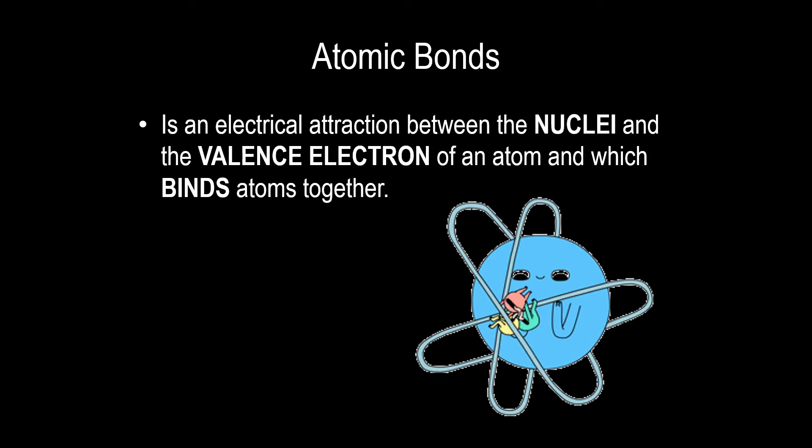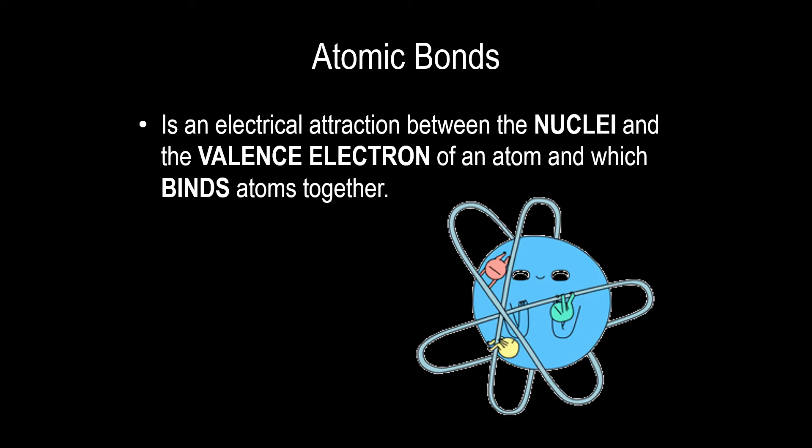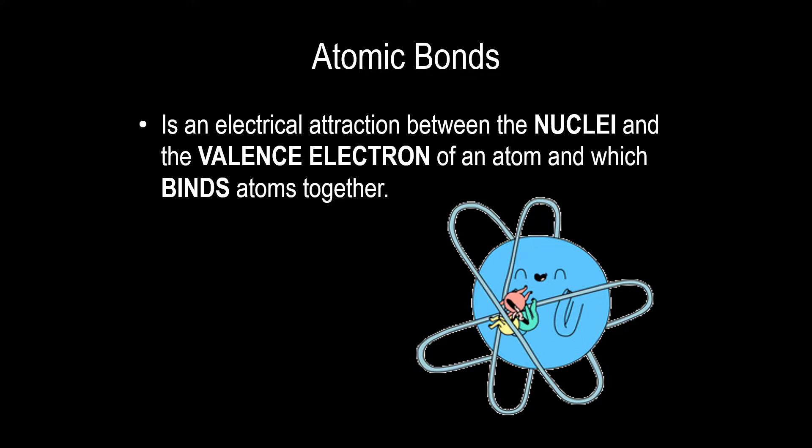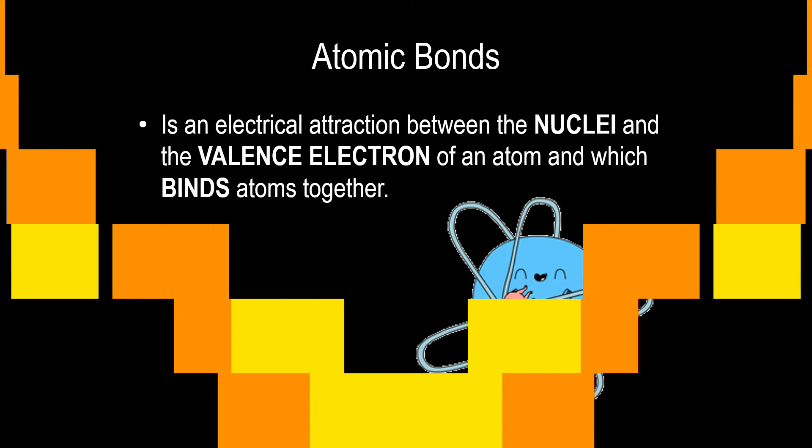Atomic bonds is an electrical attraction between the nuclei and the valence electron of an atom and which binds atoms together. In other words, we form bonds through valence electrons. And for today, we're going to focus on two types of bonding, the covalent and ionic bonds.